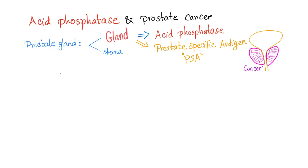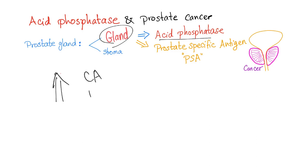Acid phosphatase is not that great in diagnosing prostate cancer. Why? Because acid phosphatase can be high in prostate cancer, prostatitis, as well as prostatic hypertrophy. So it's not specific for cancer.